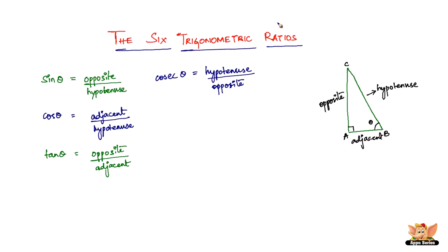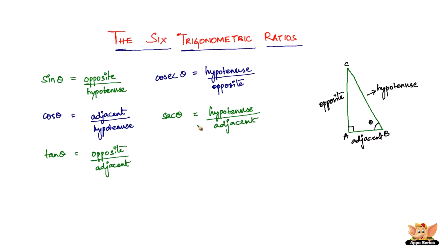Then we have secant theta, abbreviated as sec theta. Secant theta is the reciprocal of cos theta, which gives us hypotenuse divided by adjacent. The full names are cosecant theta, secant theta, sine theta, cosine theta, and tangent theta — though they are abbreviated as sin, cos, tan, cosec, and sec. Secant theta is pronounced secant theta more often than not.